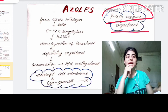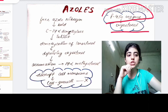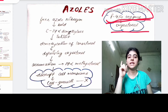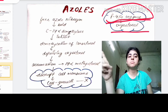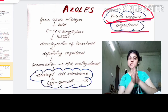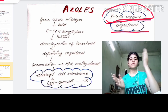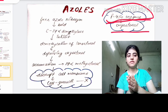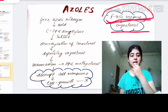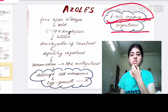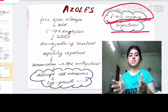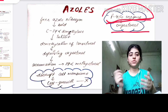What azole does is bind to the P450 enzyme, which is responsible for ergosterol synthesis. By binding to this enzyme, azole inhibits its activity. As a result, ergosterol is not synthesized, and the fungal cell is damaged. Now let's go through a more detailed discussion of how azole works.